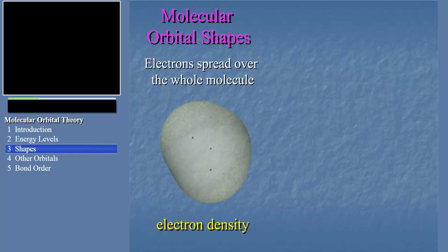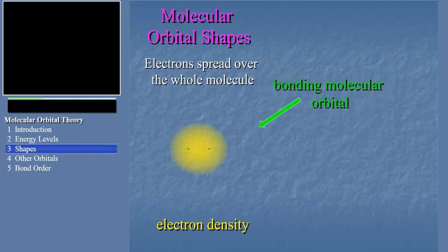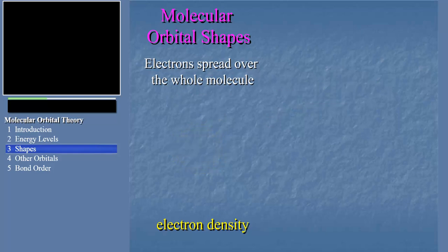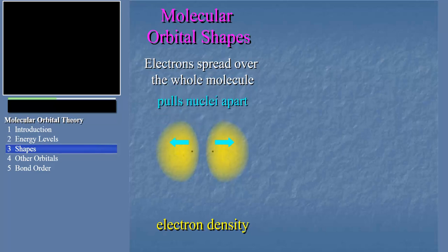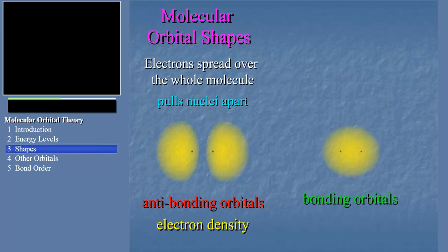If one molecular orbital places a lot of electron density between two of the atoms in the molecule, this molecular orbital is called a bonding-type orbital. Because the net effect of its electron density is to pull the nuclei of the atoms together to create the effect we call bonding. Other molecular orbitals may distribute the electron density in ways that pull the nuclei apart. When electron density of the molecular orbital is not between the nuclei, but on opposite sides of the nuclei, the electrons in this molecular orbital are actually pulling the nuclei away from each other. So these kinds of molecular orbitals are called anti-bonding orbitals. So the amount of bonding in the molecule is just the total effect of the electrons in all these bonding and anti-bonding type orbitals.